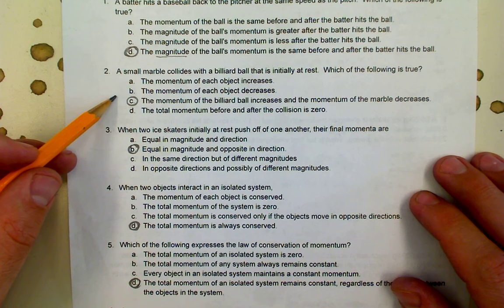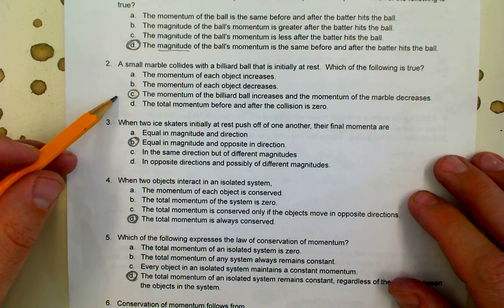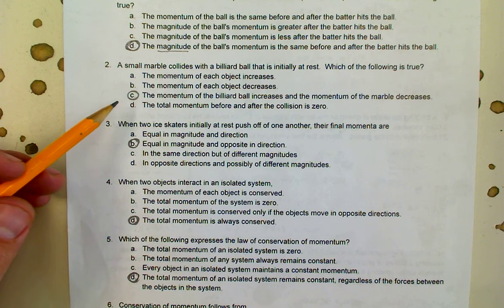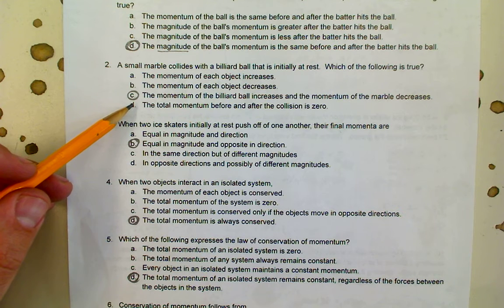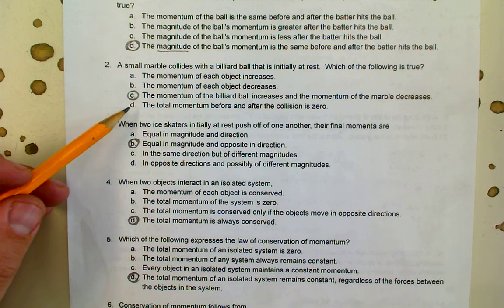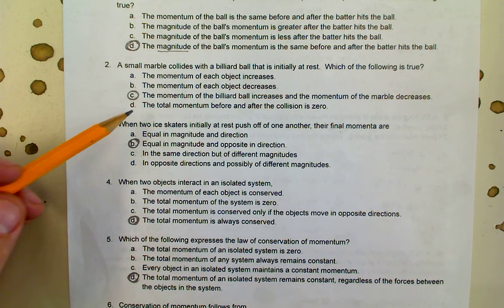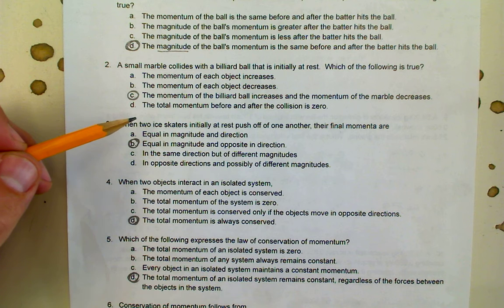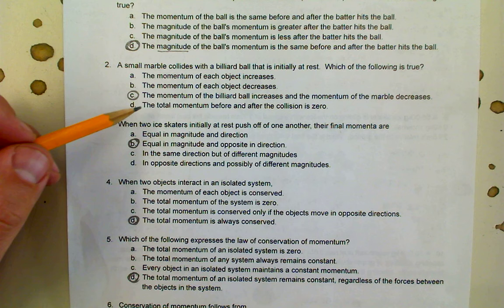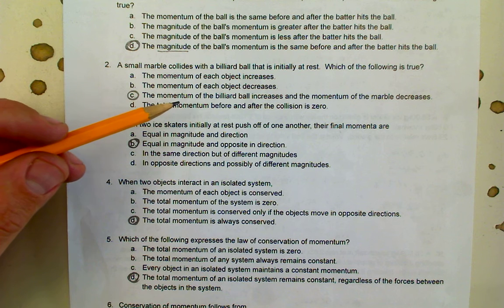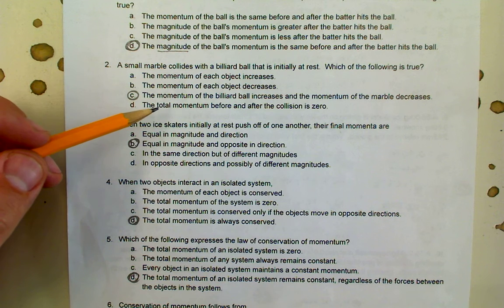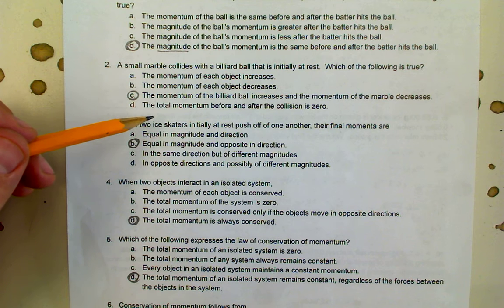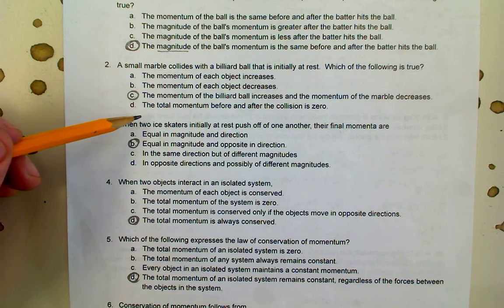A small marble collides with a billiard ball that is initially at rest. Which of the following is true? There are a couple questions on this formative that are similar to this idea. The correct answer is that the momentum of the billiard ball increases and the momentum of the marble decreases. We think about conservation of momentum in a system like this where what's really happening is some of the momentum of the marble is being transferred to the billiard ball. We know that the billiard ball will be moving maybe slowly after the marble hits it but it would be moving, and so it would have some positive momentum. If momentum is to be conserved then the marble must have decreased in its momentum so that the momentum of the billiard ball could increase.